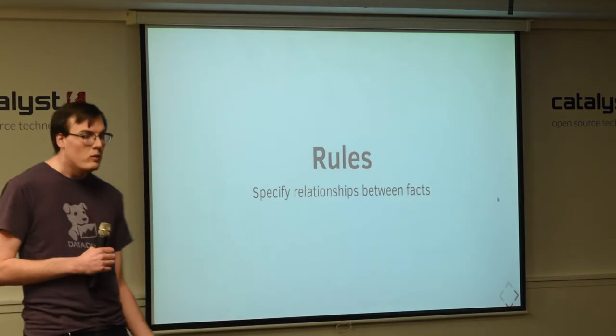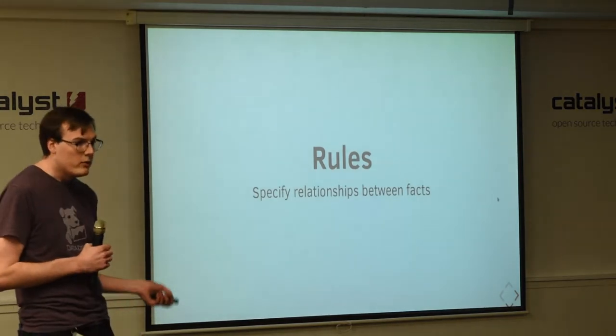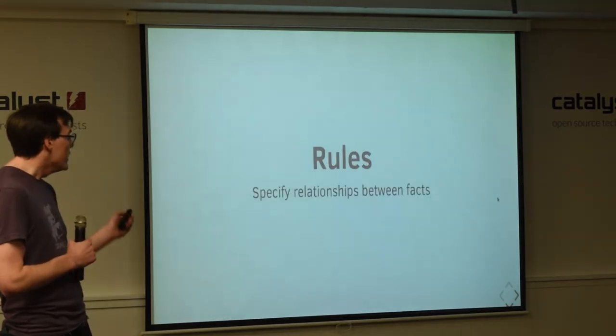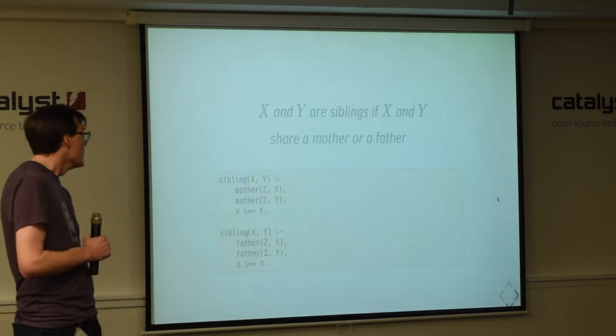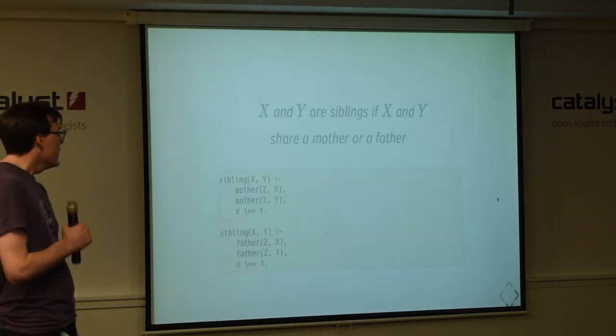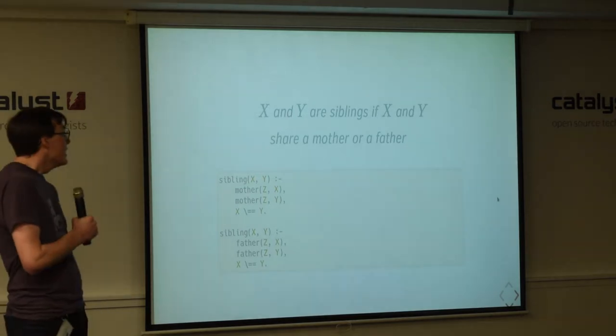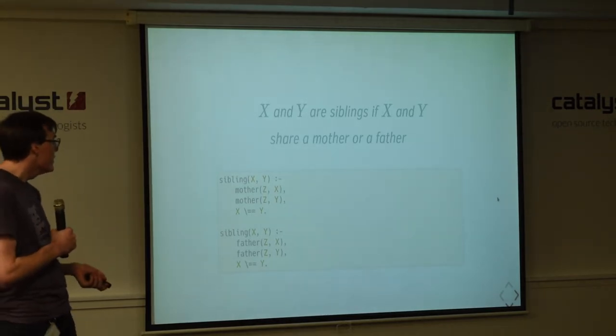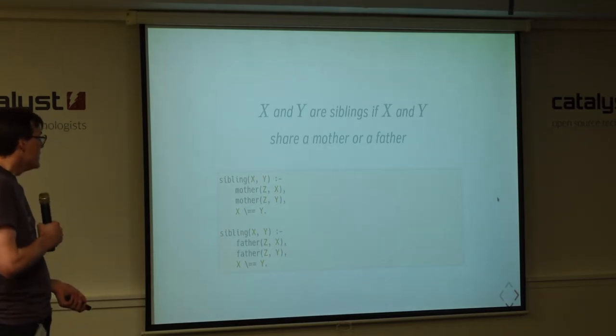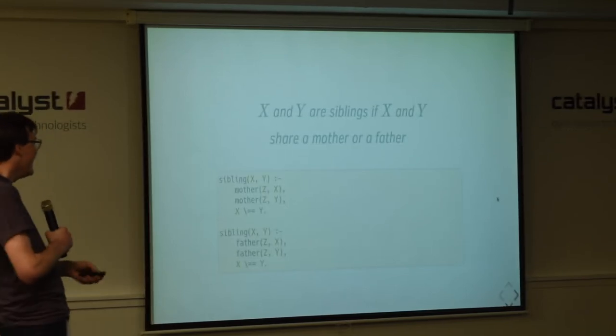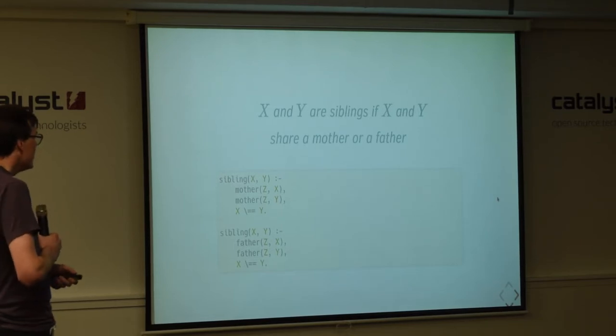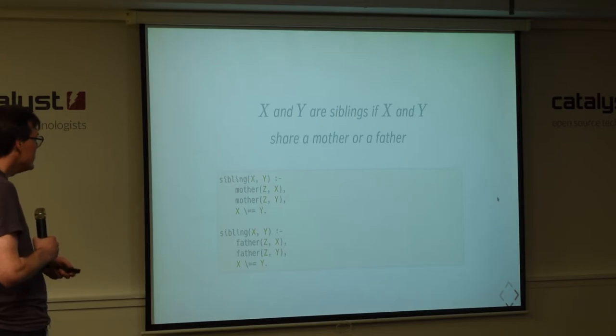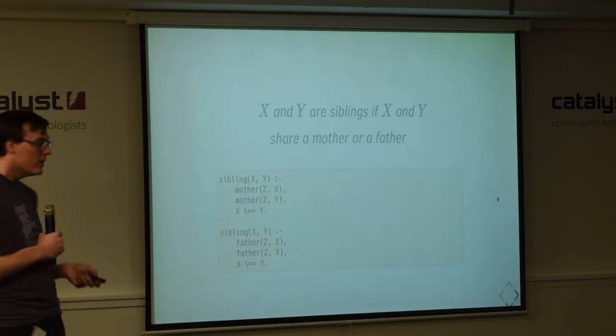And prologue gives us this in the form of rules, which I mentioned earlier. Rules are another form of a clause. And rules let us define relationships between facts. So, we can define a rule for siblings. If we define siblings as being x and y are siblings if x and y share a mother or father, then we can express this in prologue as sibling x, y. But x and y are siblings if x has a mother zed, if y has a mother zed, and x and y are not the same person.